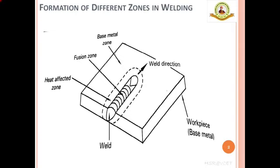Zone 2 is the heat affected zone. The fusion zone is surrounded by the heat affected zone — the portion that was not melted but was subjected to elevated temperatures for a brief period of time. As a result, these portions experience changes in microstructure and mechanical properties. The extent and magnitude of these changes depend primarily on the type of base metal and the amount and concentration of heat input at the joint. The metal in this area is often weaker than both the base metal and the weld metal, and it is also where residual stresses are found.